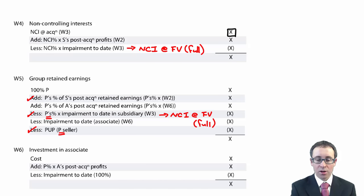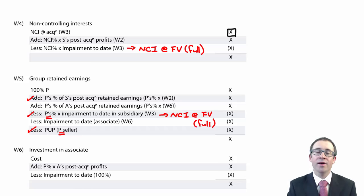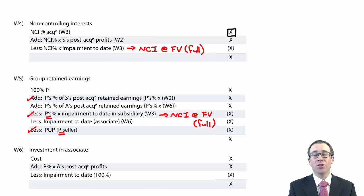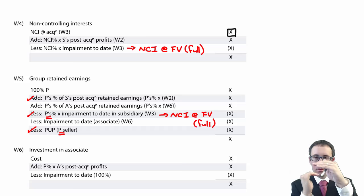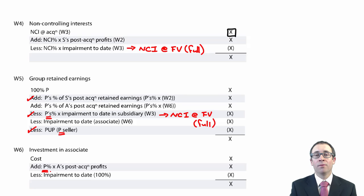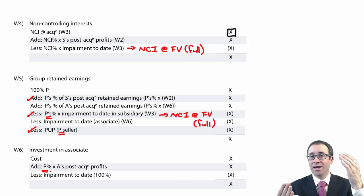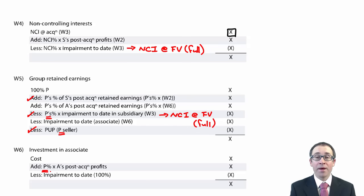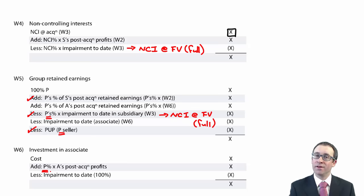Looking at working six — investment in associates. If you have significant influence you equity-account for it, showing one line item in the statement of financial position: investment in associates. You take your cost and add on your share of the associate's post-acquisition profits, looking at the movement in retained earnings from acquisition to year-end. Your P share — so if you own 30%, you put in 30% of the post-acquisition profits.